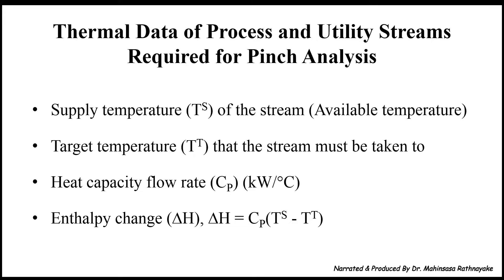We need to extract thermal data of process and utility streams for pinch analysis using the process flow diagram. There are four types of thermal data required: supply temperature of the stream, meaning the available temperature; target temperature that the stream must be taken into; heat capacity flow rate of the stream in kilowatt per degree Celsius; and enthalpy change for that stream. Enthalpy change can be calculated using the heat capacity flow rate and the difference between the supply temperature and the target temperature.